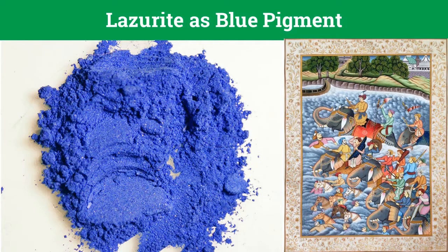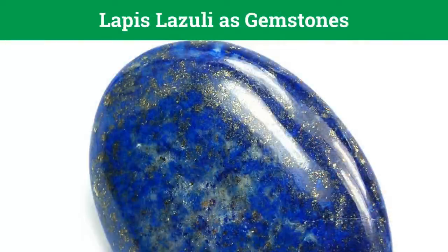There are also several uses of feldspathoid minerals. Powdered lazurite was formerly used as an ultramarine paint pigment; however, today ultramarine is produced synthetically. Lapis lazuli is a highly prized ornamental stone and was one of the first gemstones to ever be worn in jewelry. It is a mixture of lazurite with calcite, pyroxene, and small amounts of golden pyrite, which can be seen in the image.